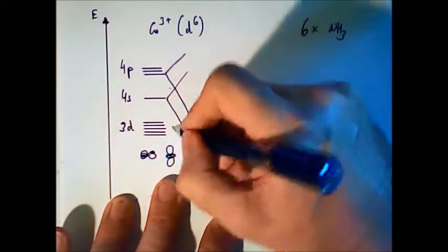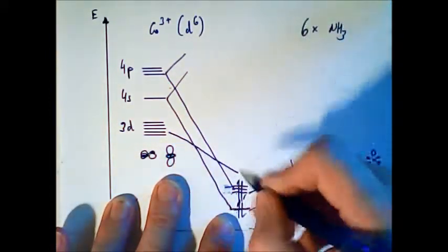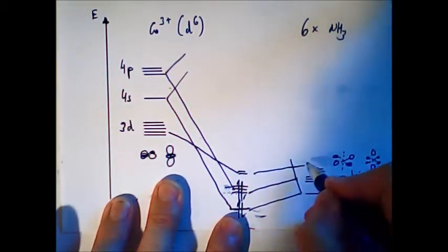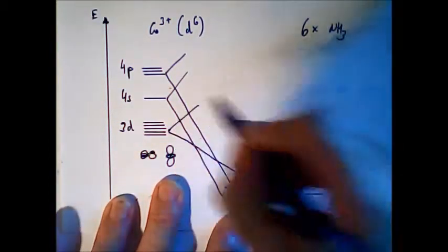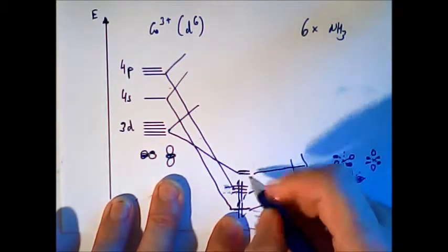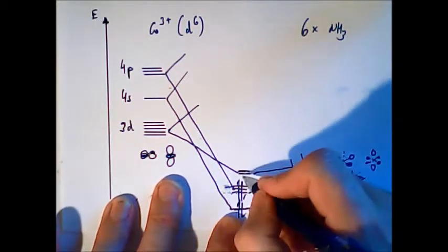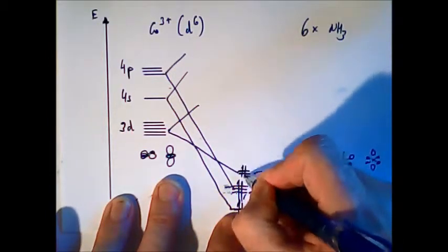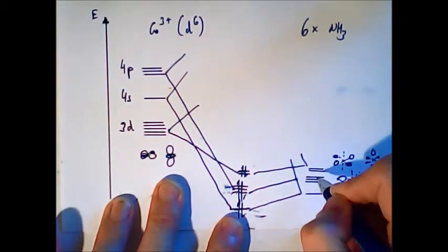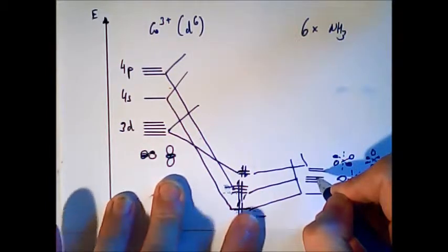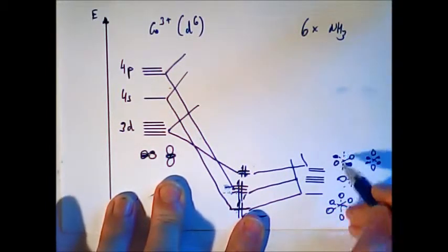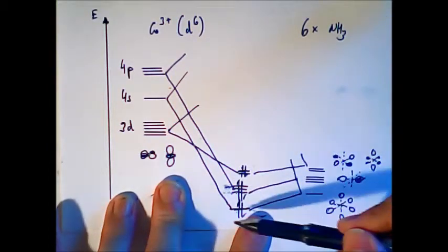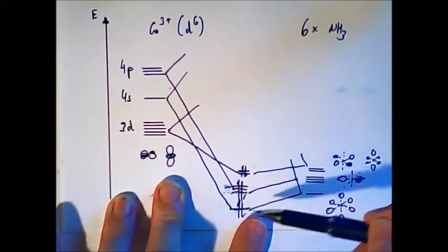So if I put this one here in the middle, it will perfectly match the ligand orbitals. That means these two find a partner in the x-square minus y-square and z-square. And again, these orbitals have electrons from the ligand. Now all the twelve electrons from the ligand are now in these bonding orbitals.